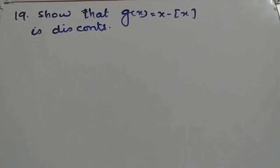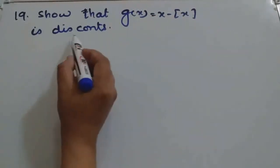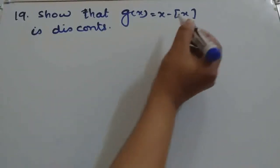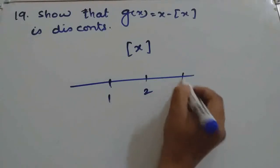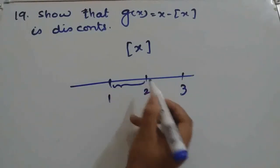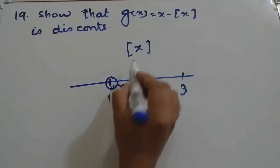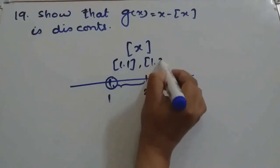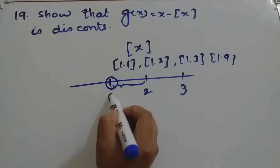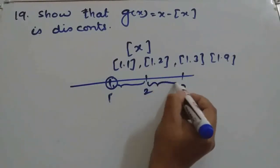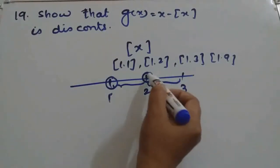The question is to show that g(x) = x minus the greatest integer function of x is discontinuous. Now, what is the greatest integer function? All values between 1 and 2 will give greatest integer as 1 — so 1.1, 1.2, 1.3, even 1.9 will give answer as 1. All values between 2 and 3 will give answer as 2: 2.1, 2.2, 2.3, 2.9 will be 2 only.